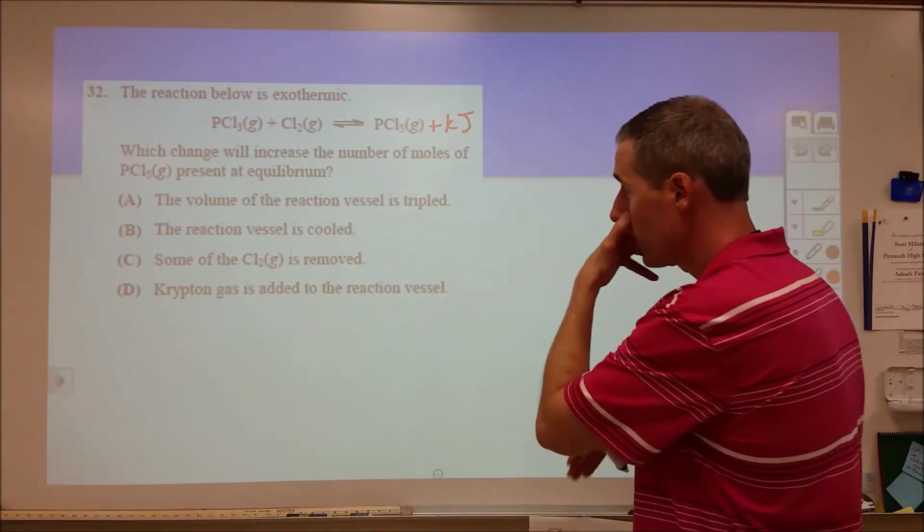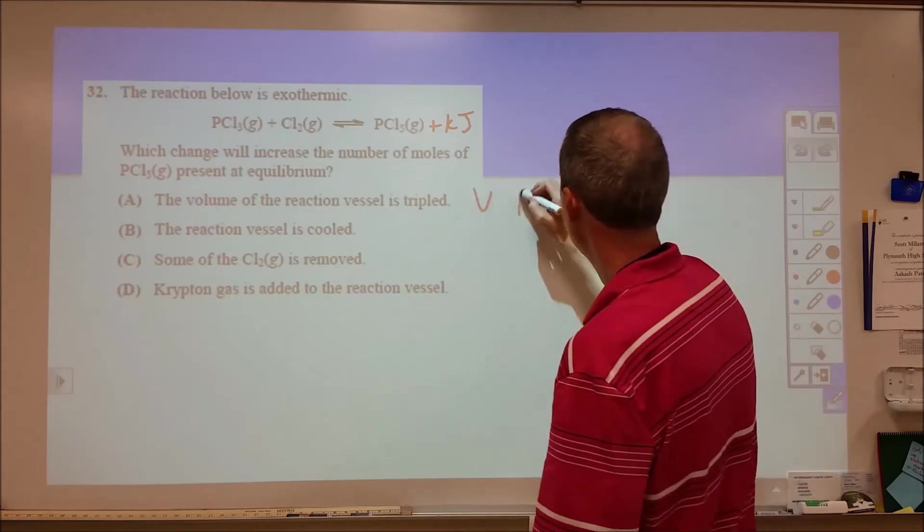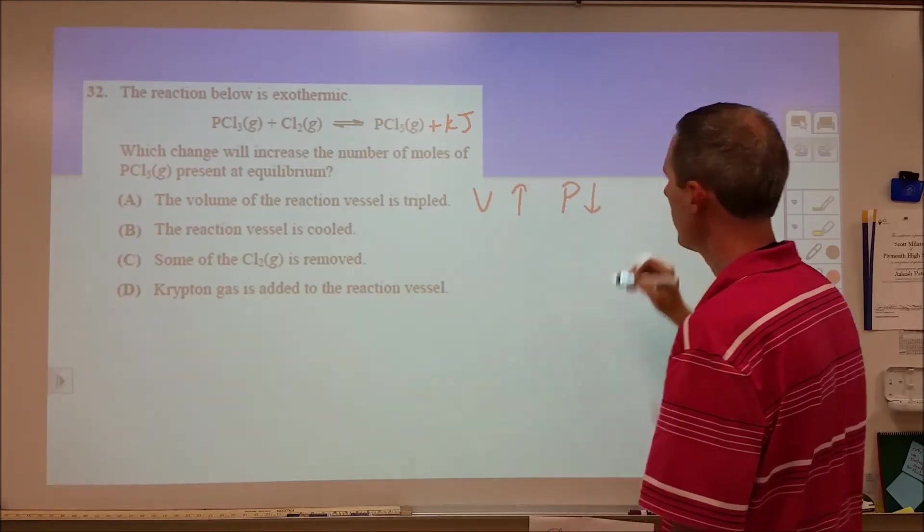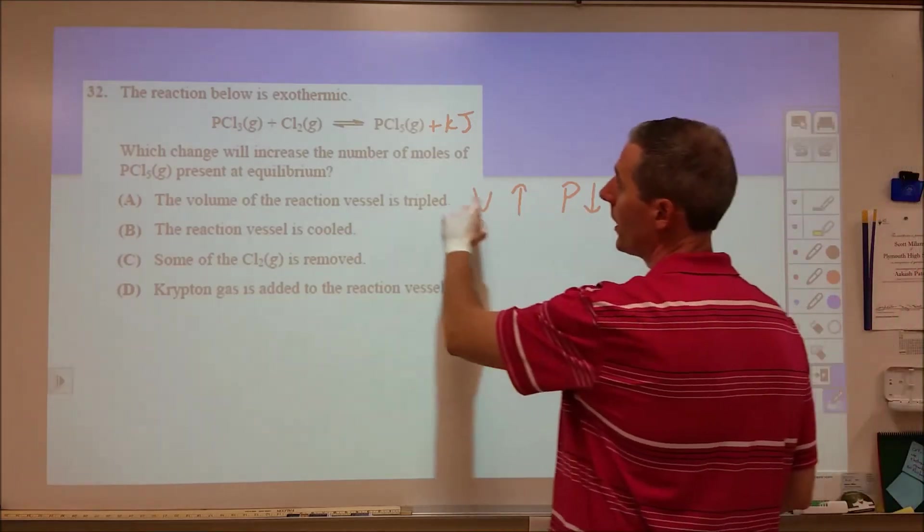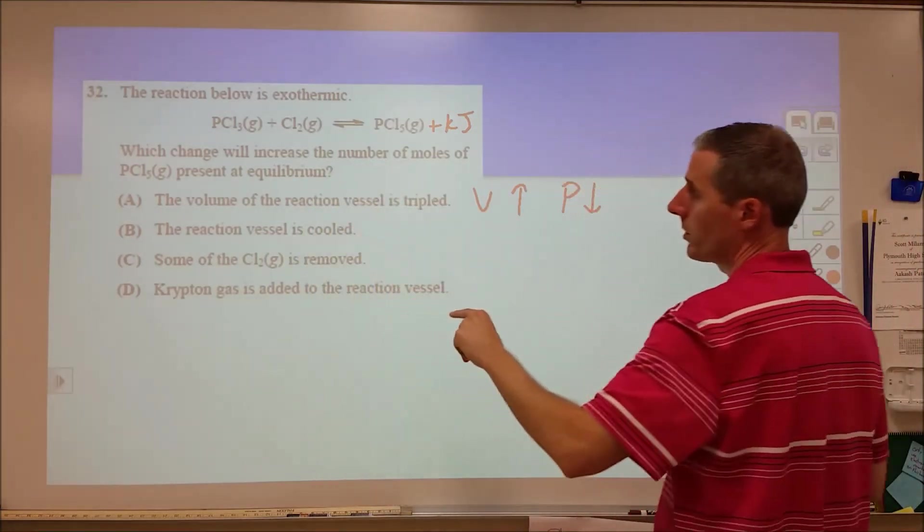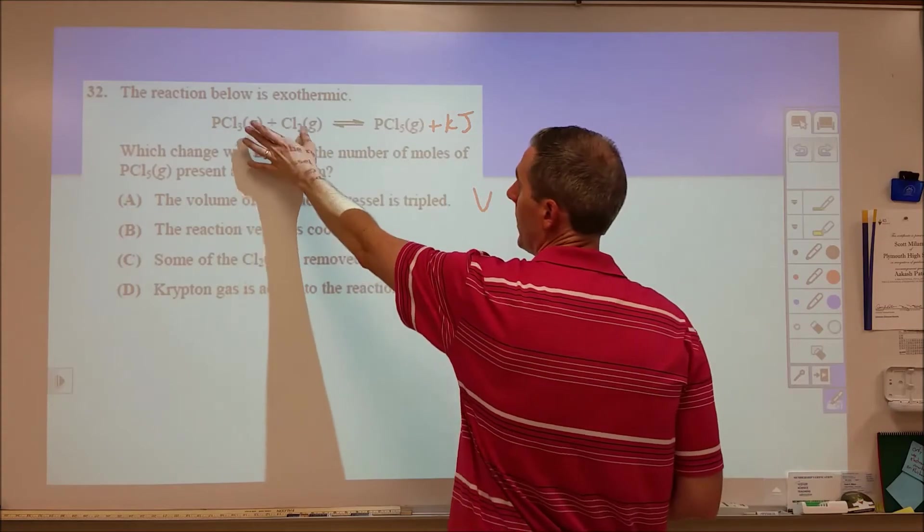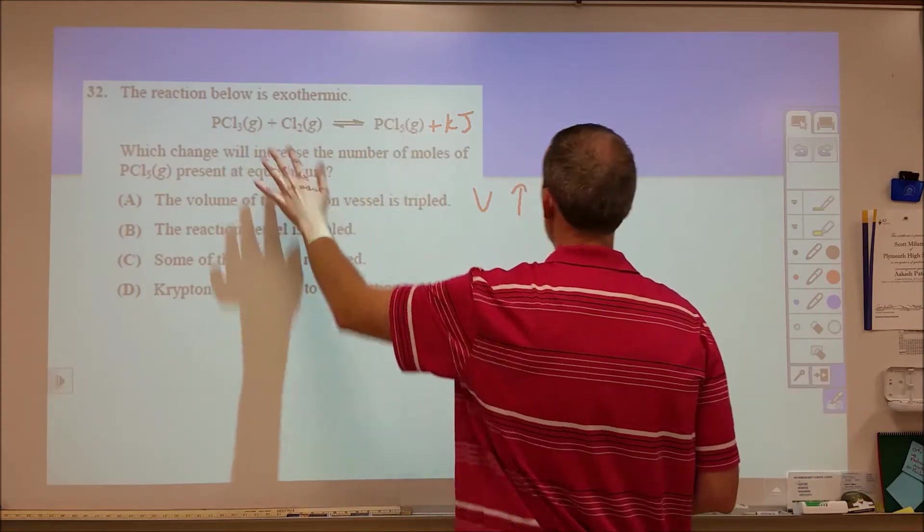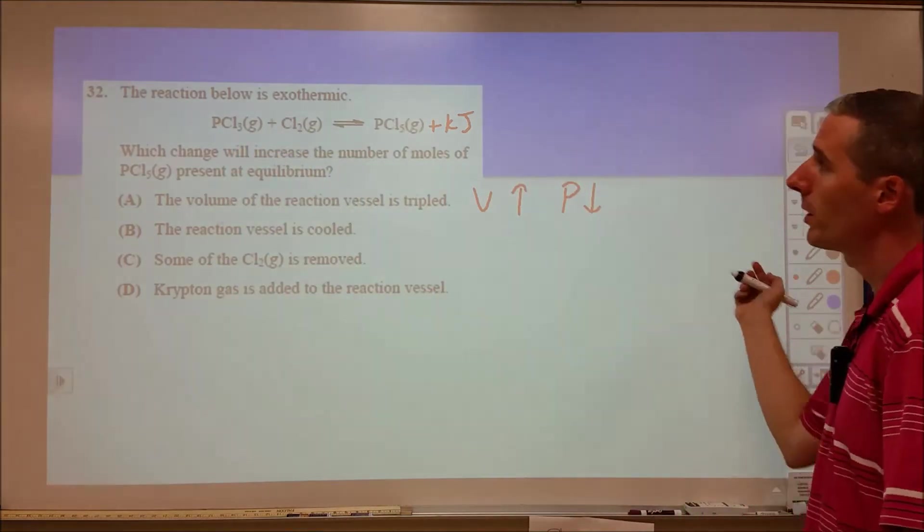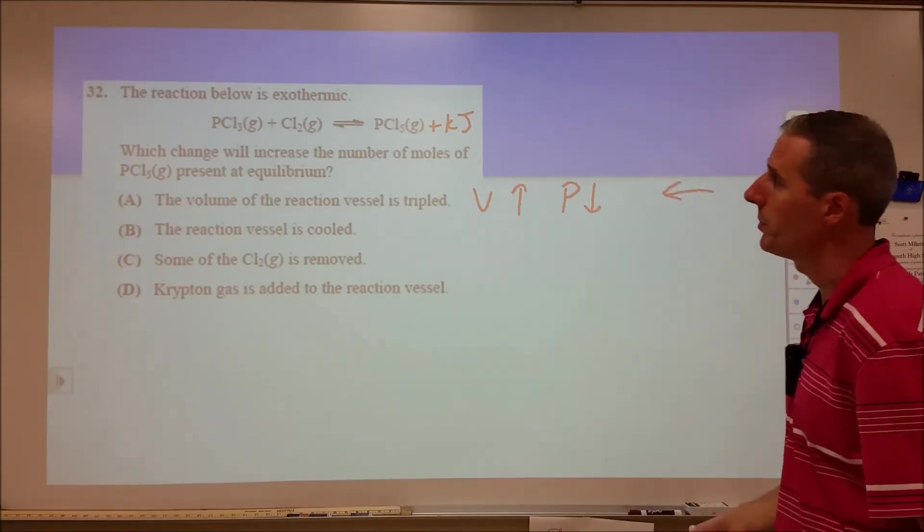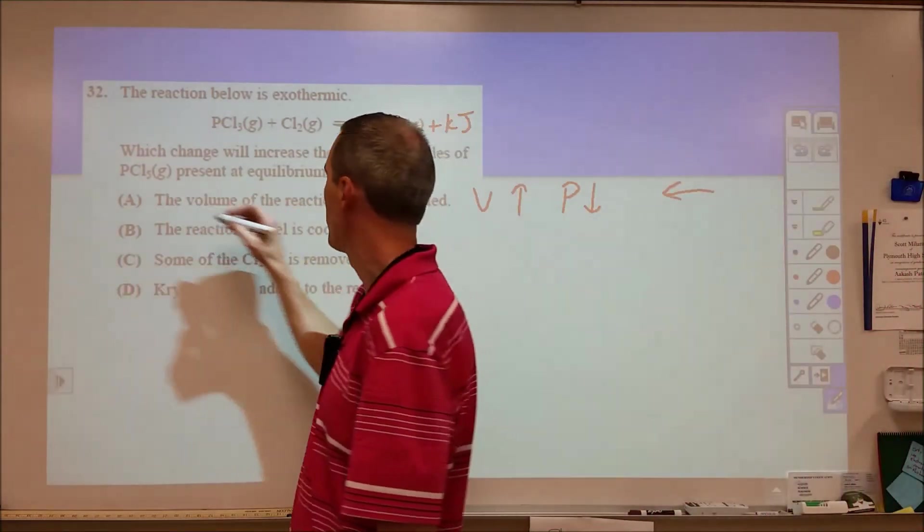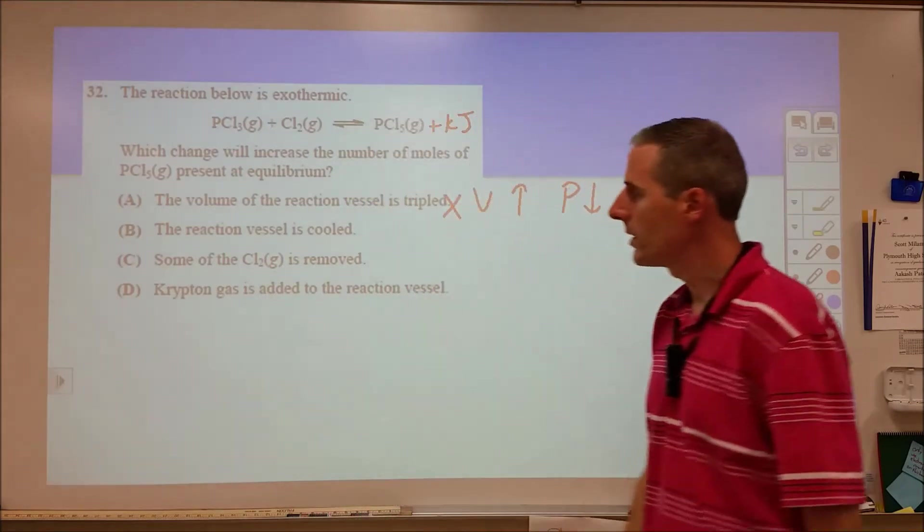The volume of the reaction vessel is tripled. If the volume increases, that means the pressure decreases. If we use Le Chatelier's principle, we can say which side has fewer gas molecules? This side has fewer, this one has more. So if the pressure goes down, we're going to shift to the left, which is going to increase our PCl3 and Cl2, but decrease our PCl5. Therefore, A is not the correct choice.